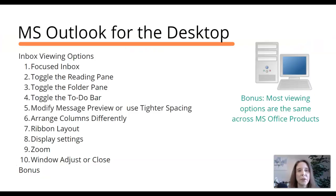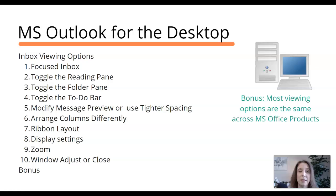Today we're going to look at a few things: the focused Inbox, toggling the reading pane, toggling the folder pane, toggling the to-do bar, how you can modify the message preview or tighten up the spacing, how to arrange the columns differently, the ribbon layout across the top of your screen, display settings at the bottom right, zoom at the bottom right, and maximizing and minimizing your window at the top right.